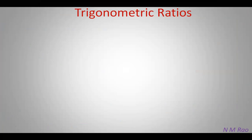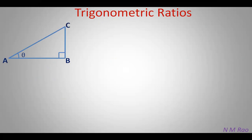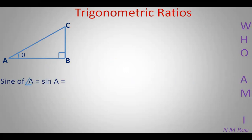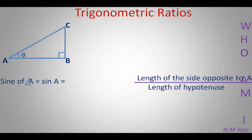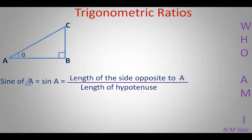Now the important section — defining the trigonometric ratios. They are the ratios of the sides of a right-angled triangle. Take right-angled triangle ABC, right-angled at B, with angle BAC named theta at angle A. The first ratio is sine of angle A, written simply as sin A. It is the ratio of the length of the side opposite to angle A to the length of the hypotenuse. Here, the side opposite to angle A is BC, so sin A equals BC upon AC.